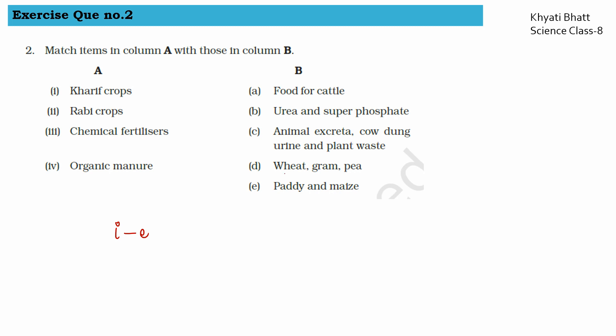Then comes Rabi crops — wheat, gram, and pea are Rabi crops. Next comes chemical fertilizer. Food for cattle is not a fertilizer; urea and super phosphate are.